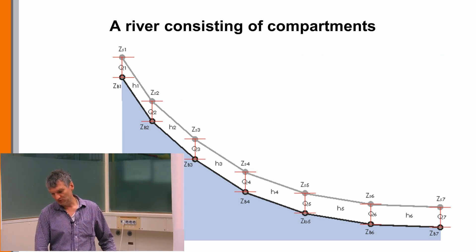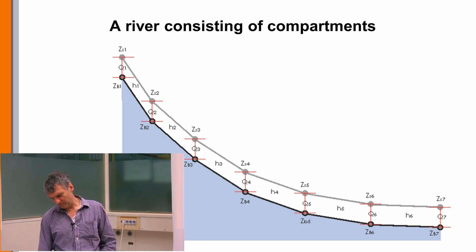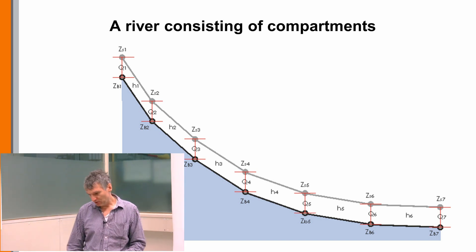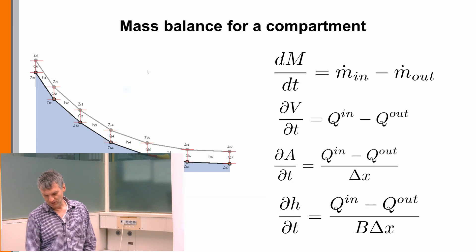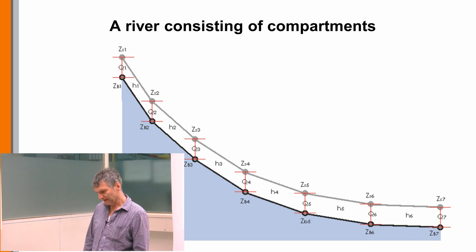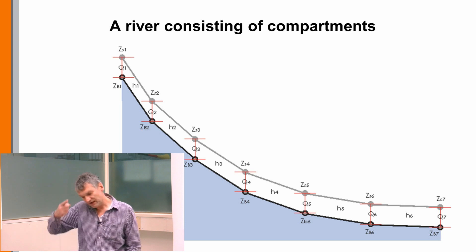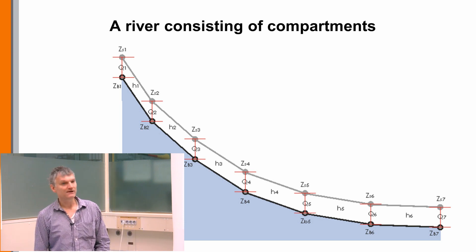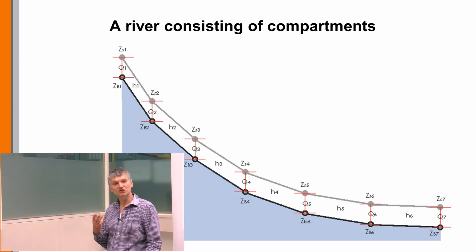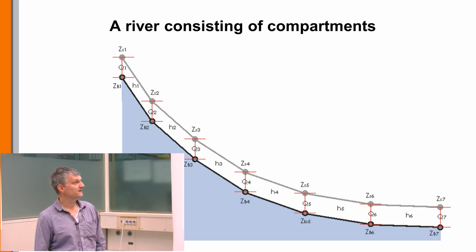We divide the river into several compartments. In hydrology, you do not typically need many compartments; normally you take compartments with the same hydrological conditions, so they are very large. Every compartment is defined by a water height, and knowing the water height gives us the mass of water in the compartment. Each compartment has a width, and in this lecture I assume a rectangular cross-section — so it has a width and a water height. From these we have the mass of water, and what we want to calculate is the change of mass in the compartment in order to follow a flood.